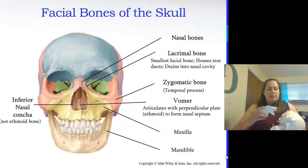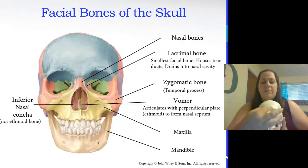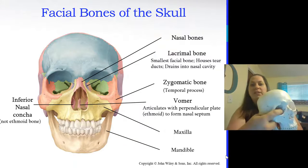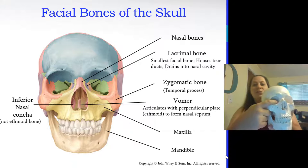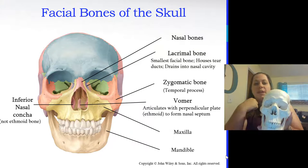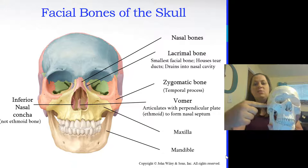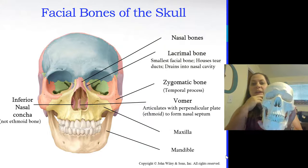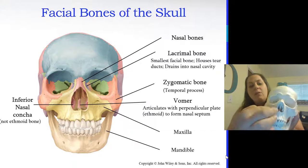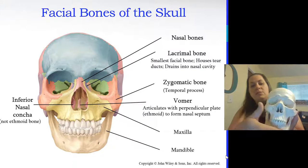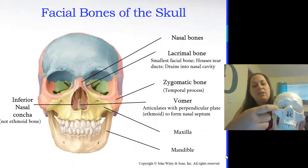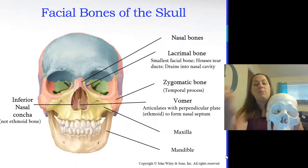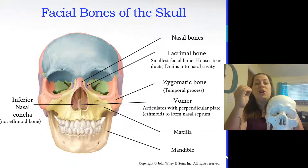Looking at the front view: the nasal bones are one on each side. Just below, near the corner of the eye, are the lacrimal bones — the smallest facial bones, housing the tear ducts that drain tears into the nasal cavity. The zygomatic bone has its temporal process going toward the temporal bone. The vomer articulates with the perpendicular plate of the ethmoid bone to form the rest of the nasal septum. The inferior nasal conchae are a separate bone from the ethmoid — the superior conchae are part of the ethmoid, but the inferior conchae are their own bone.